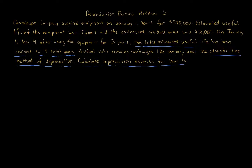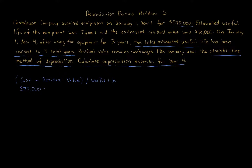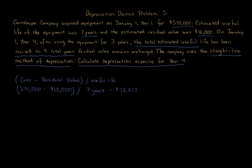What method are we using? The straight-line method. Remember our formula: we take cost minus the salvage value — the residual value, or scrap value. Think about a car when you get rid of it — you're going to have a salvage value. So the cost here is $570,000 minus the residual value of $18,000, divided over the estimated useful life of seven years.